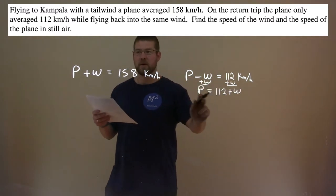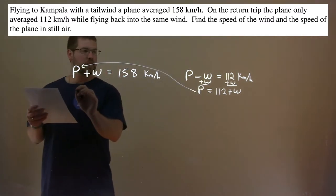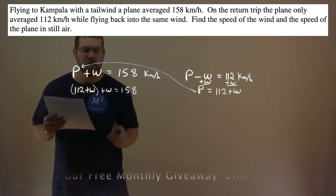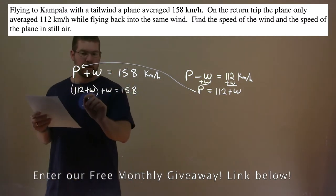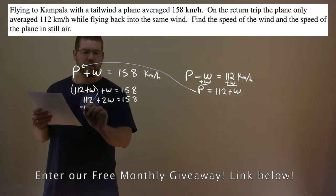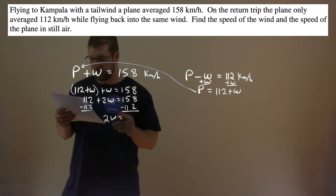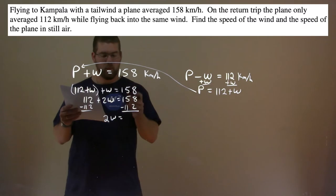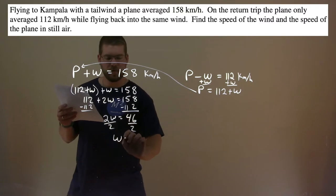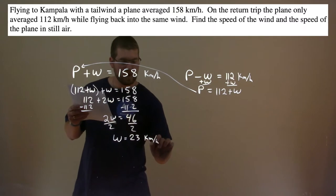We take that information and plug it into P of our first equation. So we have 112 plus W plus W equals 158, solving for W. 112 plus 2W equals 158. Subtract 112 from both sides: 2W equals 46. Divide both sides by 2, and W equals 23 kilometers per hour. That's the speed of the wind.